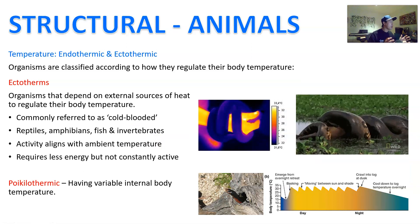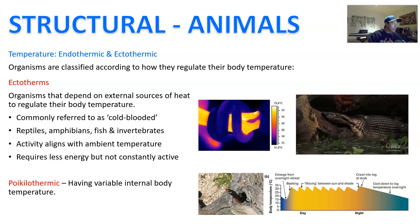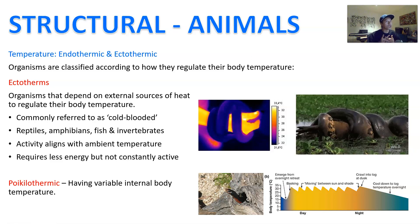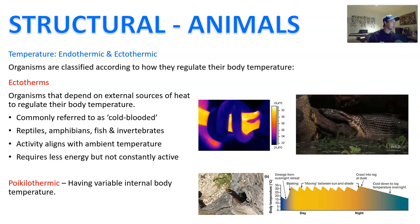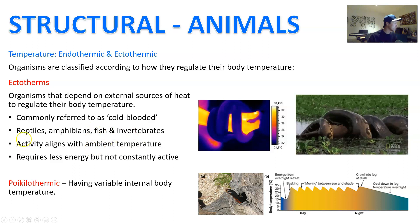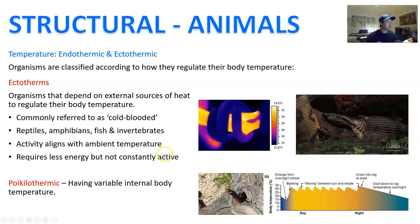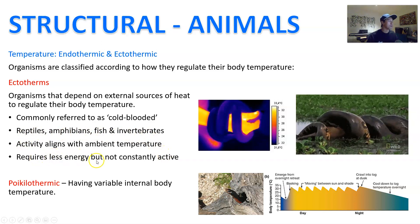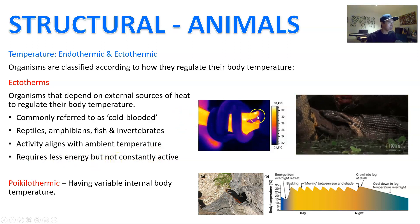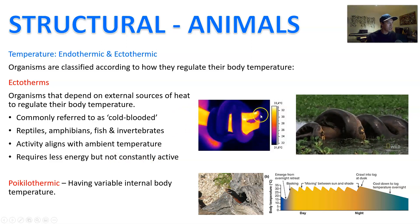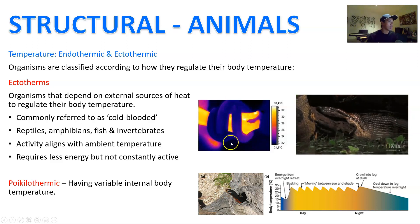Ectotherms are organisms that depend on external sources of heat to regulate their body temperature. We commonly refer to them as cold-blooded, even though it's not entirely accurate because their blood isn't cold all the time — it really just aligns with the ambient temperature. They include reptiles, amphibians, fish, and invertebrates. The trade-off is that they require less energy, but can't be as active. You can see in the infrared comparison that a person generates their own body heat, but the snake's temperature is going to match the ambient temperature, so the snake's not a super active animal.